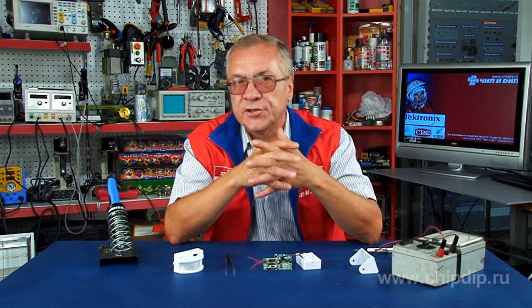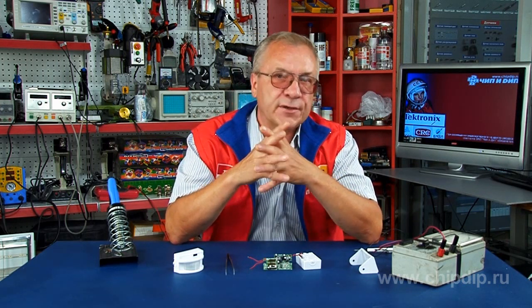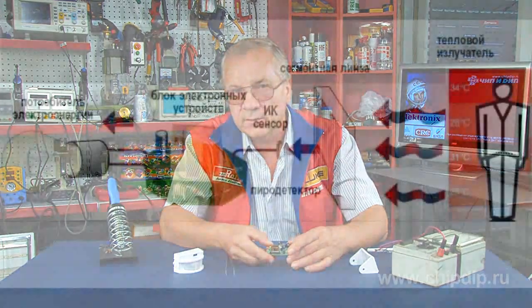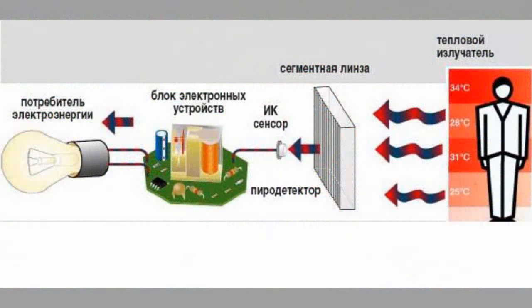For example, such sensors are basically unable to detect the presence of a person in a room with heat-insulated floors. In its physical nature, IR radiation and visible light are the same. When infrared light reaches a lens, the photocell changes its parameters.